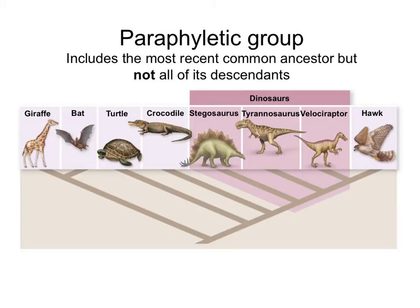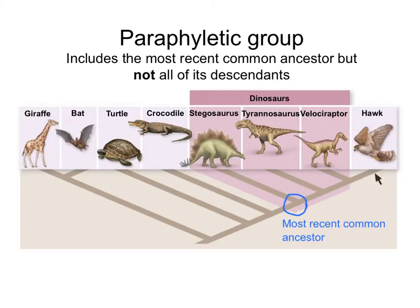On the other hand, if we leave out some of the descendants from the common ancestor, we will be forming a paraphyletic group, and we don't want that. For example, if we have dinosaurs without including birds, we will have a paraphyletic group. Looking at the common ancestor of all dinosaurs, not all descendants from that ancestor are included — birds also derive from that ancestor, yet birds are not included in the group dinosaurs. So dinosaurs form a paraphyletic group because they do not include all descendants from their common ancestor.